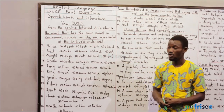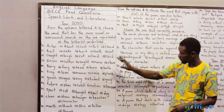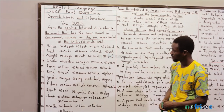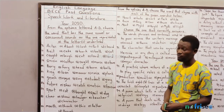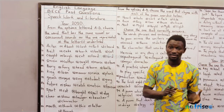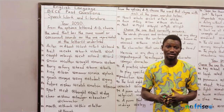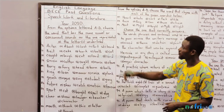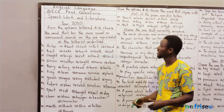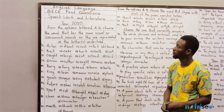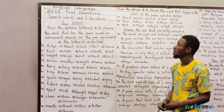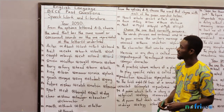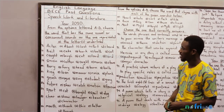So the first year we'll be looking at is the previous year, the closely previous year — that's year 2020. The instruction states here that from the options letter A to D, choose the word that has the same vowel or consonant sounds as the one represented in the letters on the line.